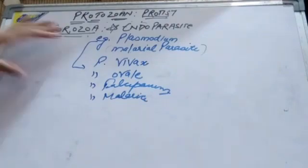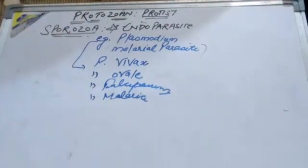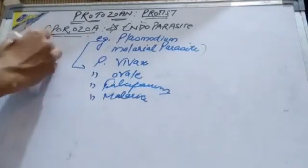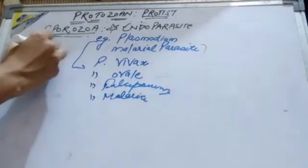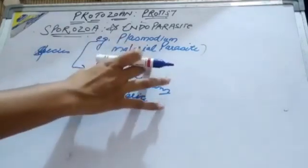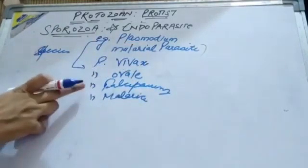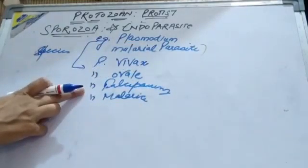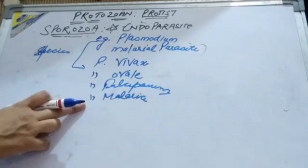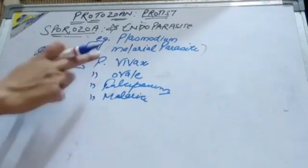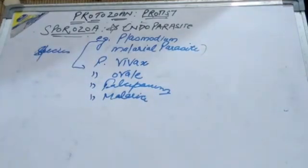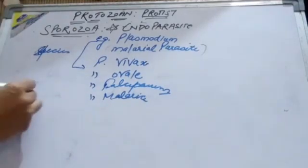There are several species of Plasmodium. The species are: Plasmodium vivax, Plasmodium ovale, Plasmodium falciparum, and Plasmodium malariae. These are the four main species of Plasmodium.